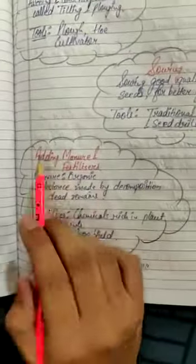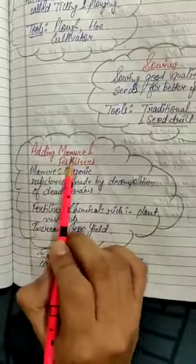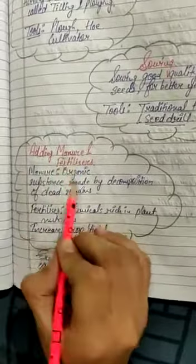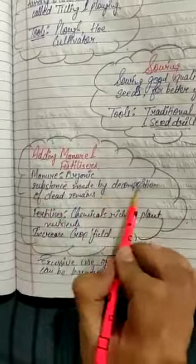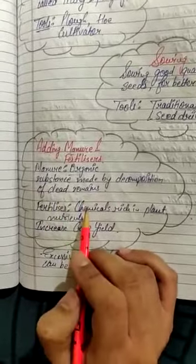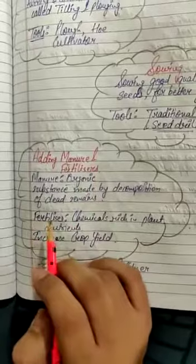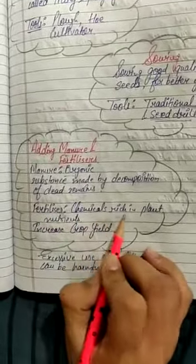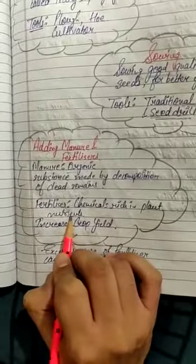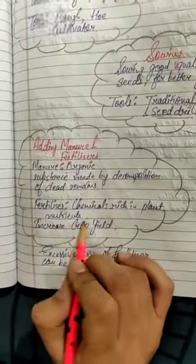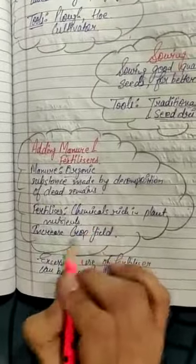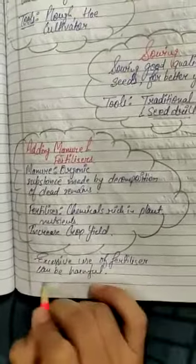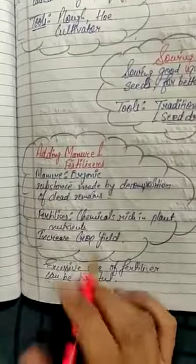Now the next one is adding manure and fertilizers. Manure is an organic substance made by decomposition of dead and decaying matter. It adds a lot of humus to the soil, whereas fertilizers are chemicals rich in plant nutrients like potassium, nitrogen, etc. They increase the crop yield, but excessive use of fertilizers can be harmful.